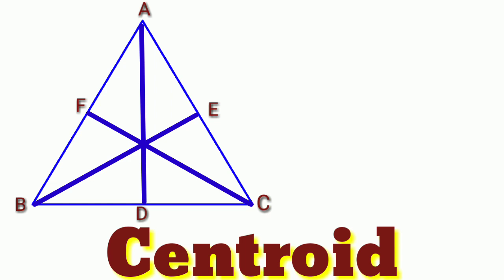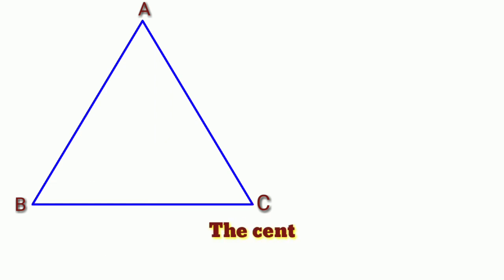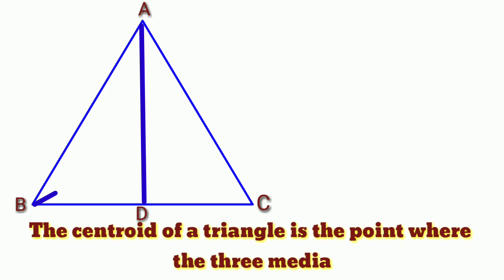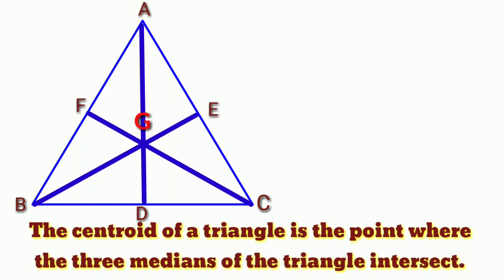Centroid: the centroid of a triangle is the point where the three medians of the triangle intersect. Here G is the centroid.